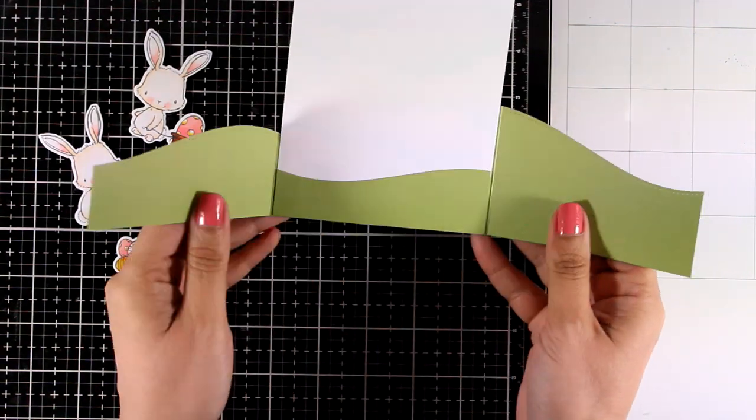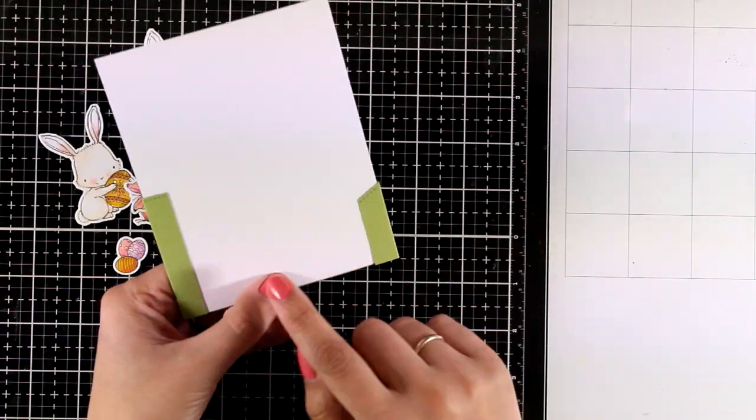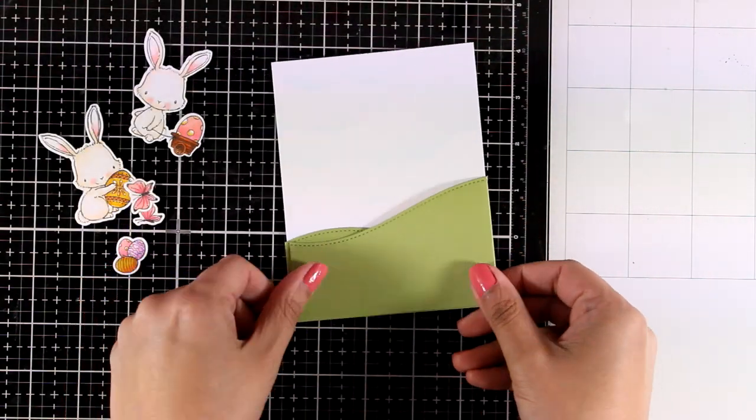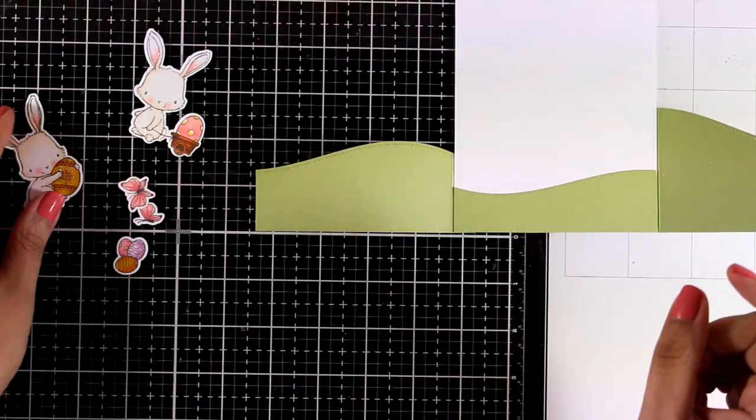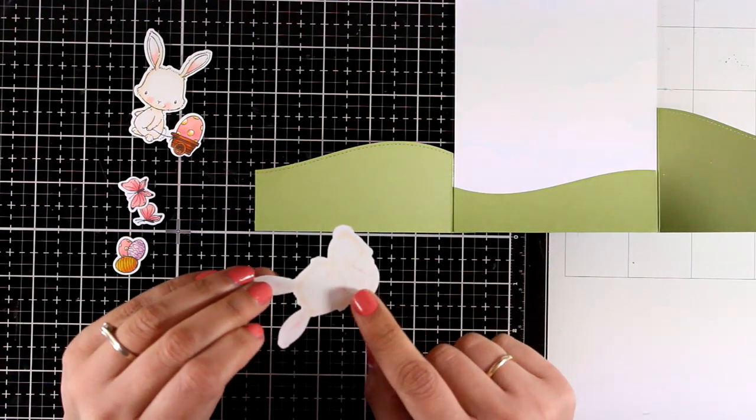At the back you will be able to see those flaps. If that bothers you, you can always cover it up with another piece of cardstock. I don't mind at all so I'm just going to leave it as it is.